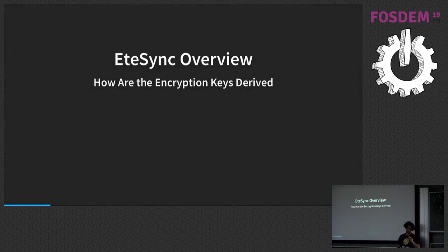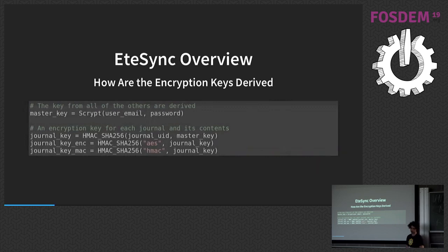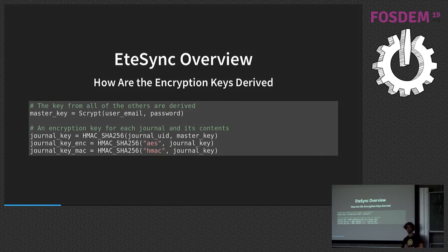The next two slides are a bit heavy, sorry about that, but I promise it's only those two. Let's talk about how encryption keys are derived. First, we use scrypt to derive the key from the user's email and password. We then derive a key for every journal based on the journal ID. The reason this is important is that when you share journals among several users, you want to make sure the key is different every time.